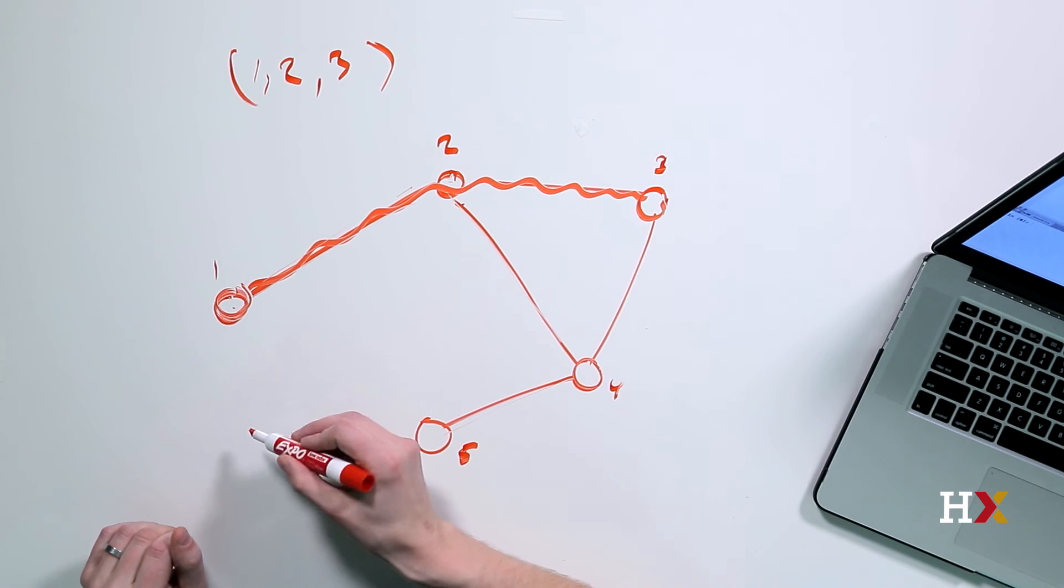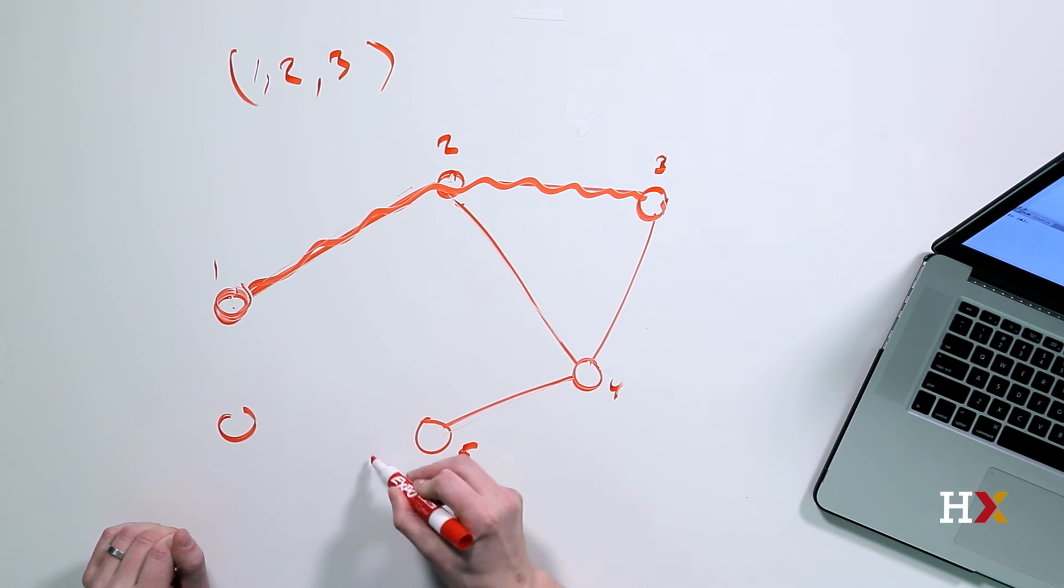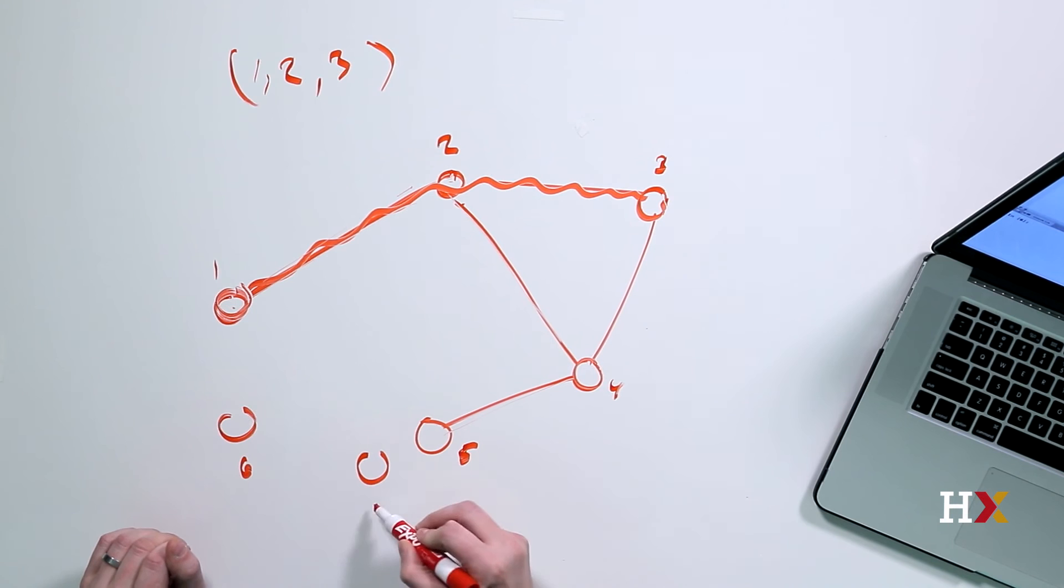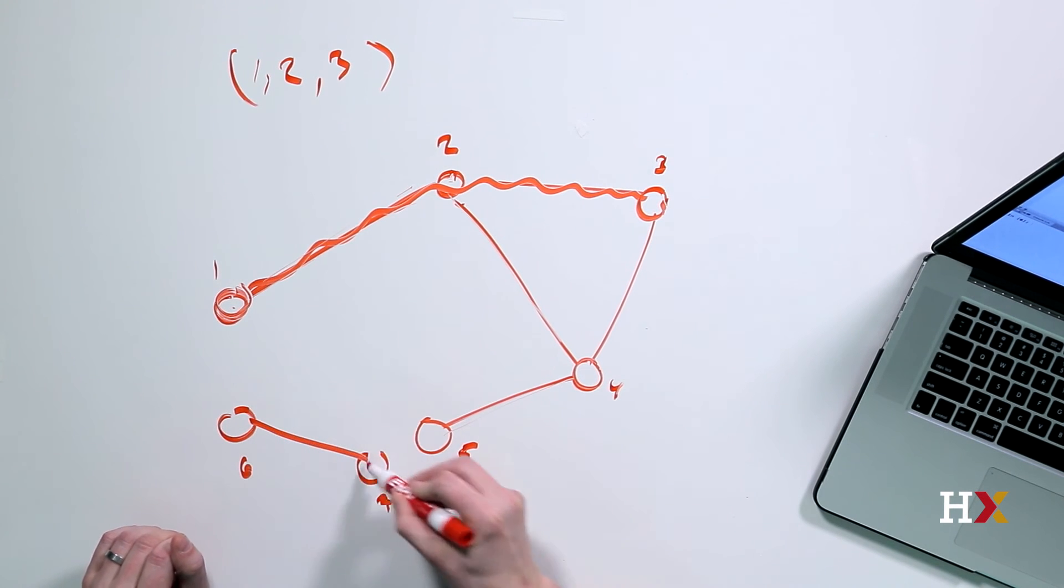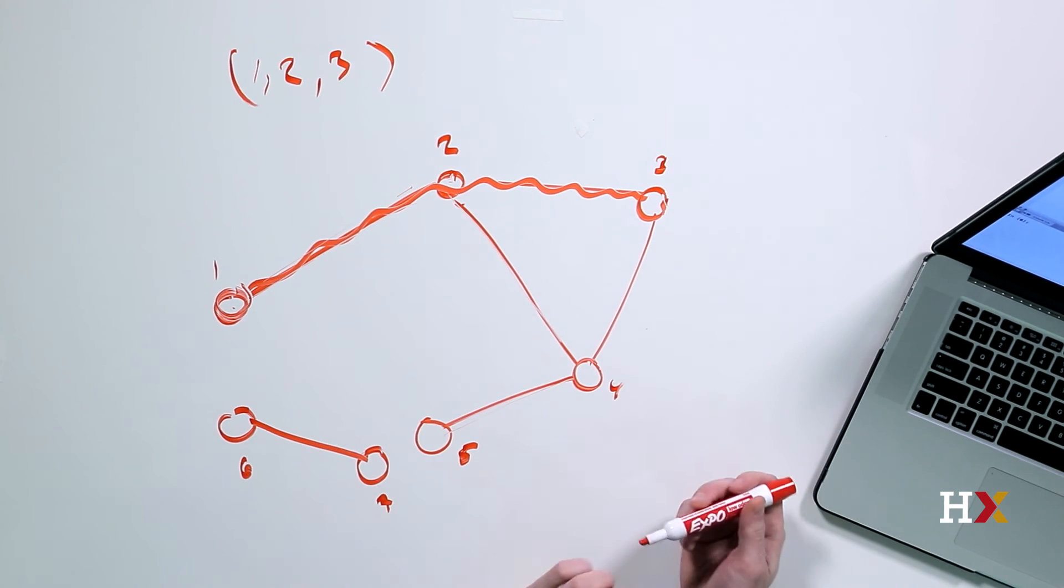So let's add a couple of vertices here to demonstrate that. We might have vertex six and seven here, and they might be connected to one another, but neither of the two is connected to the rest of the graph. That's why, in its entirety, this graph is disconnected.